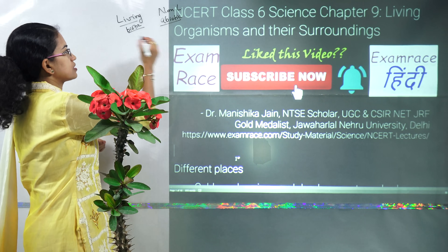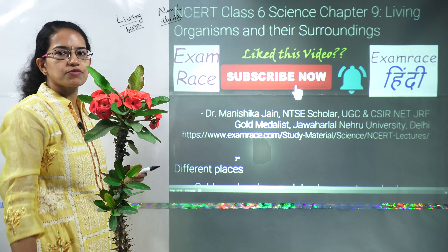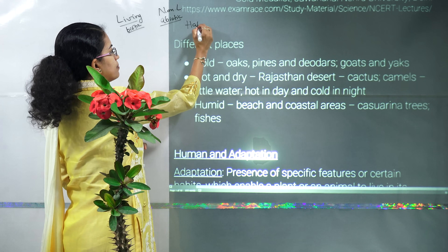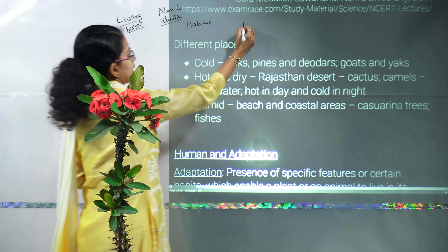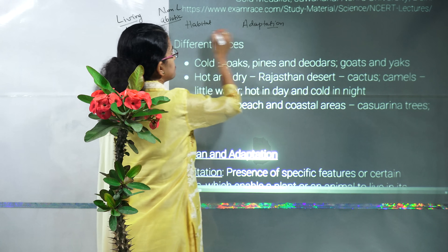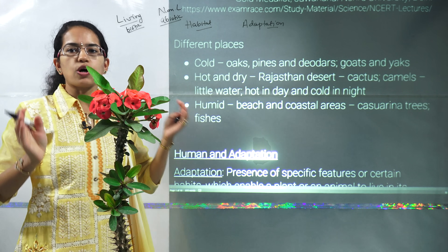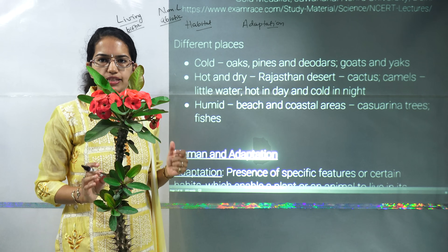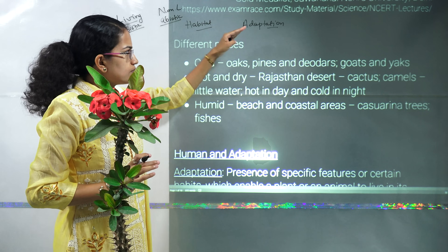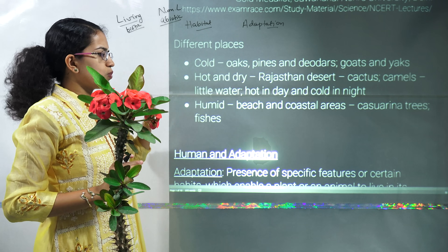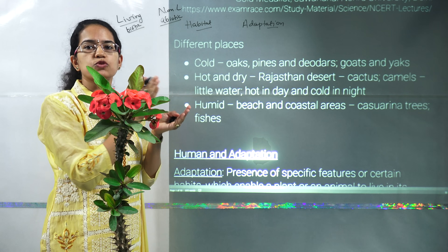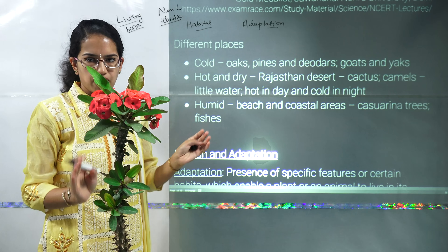Two important terms for this chapter are habitat and adaptation. Habitat is basically a living place or dwelling place of any organism. Adaptation is basically modifying the traits of oneself to exist in the living environment.